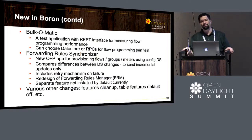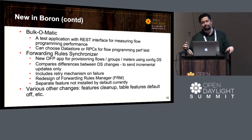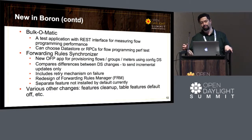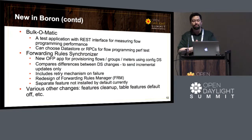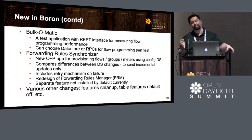We've been talking about performance and relying on tools like CBench for testing, but we needed easier-to-use test applications to test performance for both the REST interface as well as for RPCs. That was implemented in the Boron release, providing an easy-to-use interface for performance testing. An additional application added inside OpenFlow plugin was the forwarding rules synchronizer — a new application for provisioning flows, groups, and meters with the config data store.